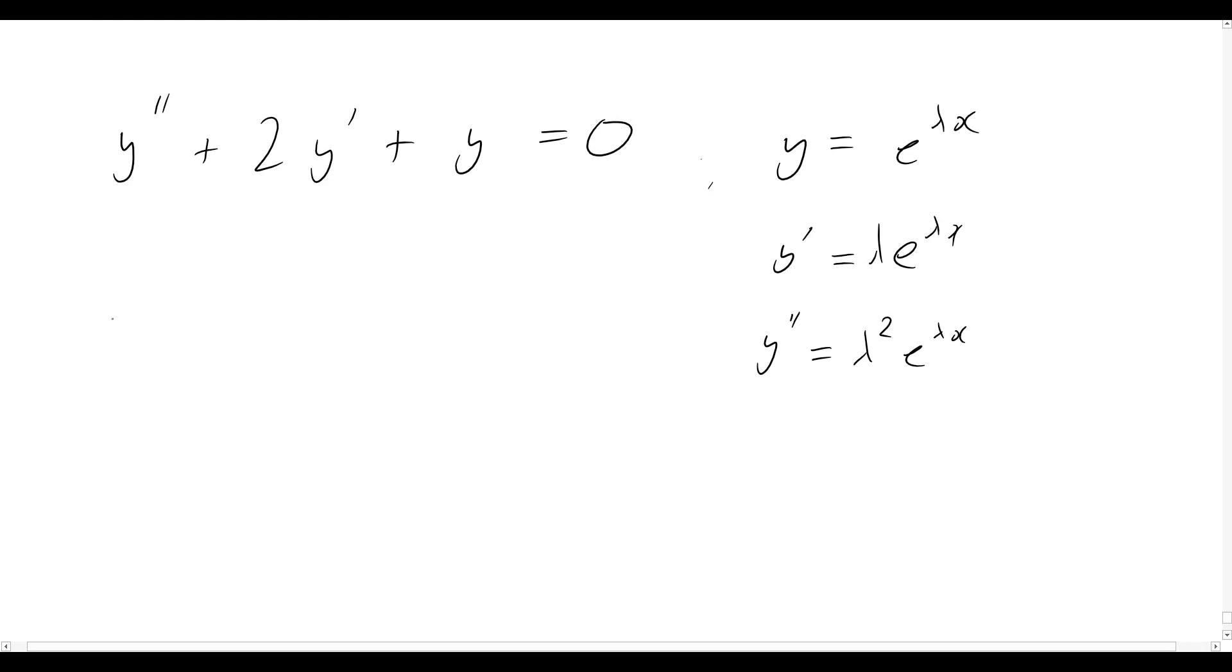Again going through exact same procedure. Let's see what we get. So we get lambda squared e to lambda x plus 2 lambda e to the lambda x plus e to the lambda x equals zero.